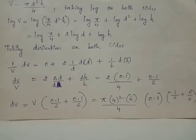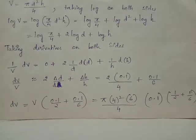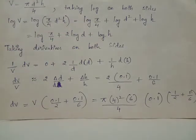Derivative of log(π/4) is 0 since it is a constant term. Derivative of 2 × log d with respect to d is 2 × (1/d) × dd, and derivative of log h with respect to h is (1/h) × dh. This equation can be rewritten as dV/V = 2 × δd/d + δh/h.